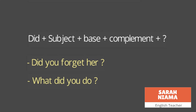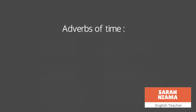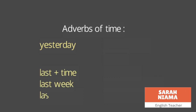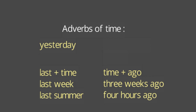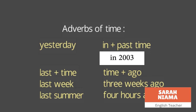The adverbs of time used with the past simple tense are: 'yesterday', 'last' plus a time expression (like 'last week', 'last summer'), a time expression plus 'ago' (like 'three weeks ago', 'four hours ago'), and 'in' plus a past year or time (like 'in 2003'). When a year or time has already passed, we use the past simple tense.